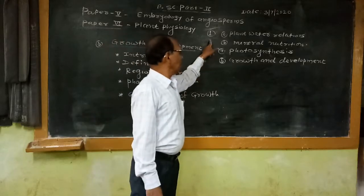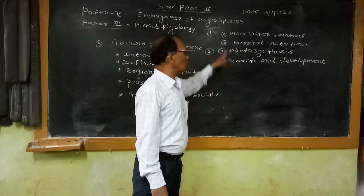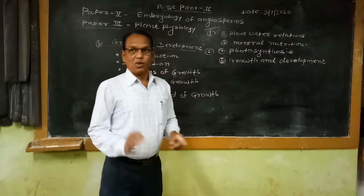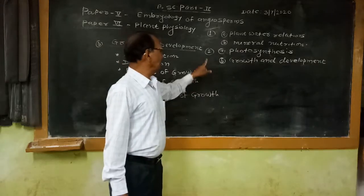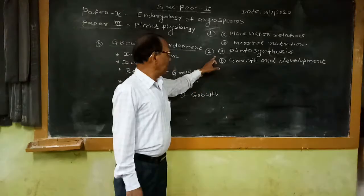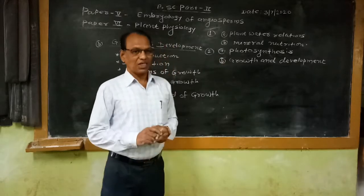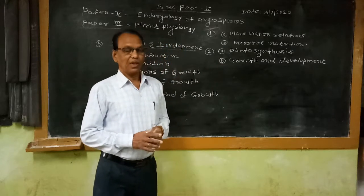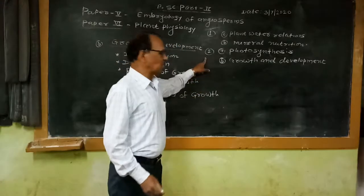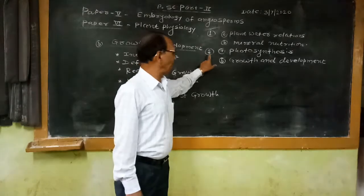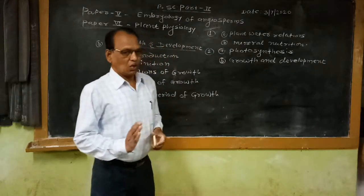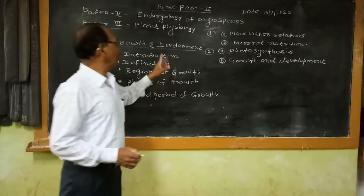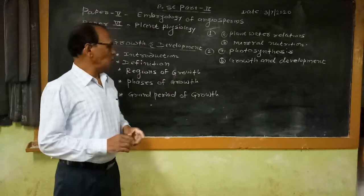Major unit one of paper number six contains two sub-units: plant water relations and mineral nutrition. Major unit number two also has two sub-units — photosynthesis is the first sub-unit, and growth and development is the second sub-unit of this plant physiology paper. Today we are going to start teaching the actual syllabus of paper number six.